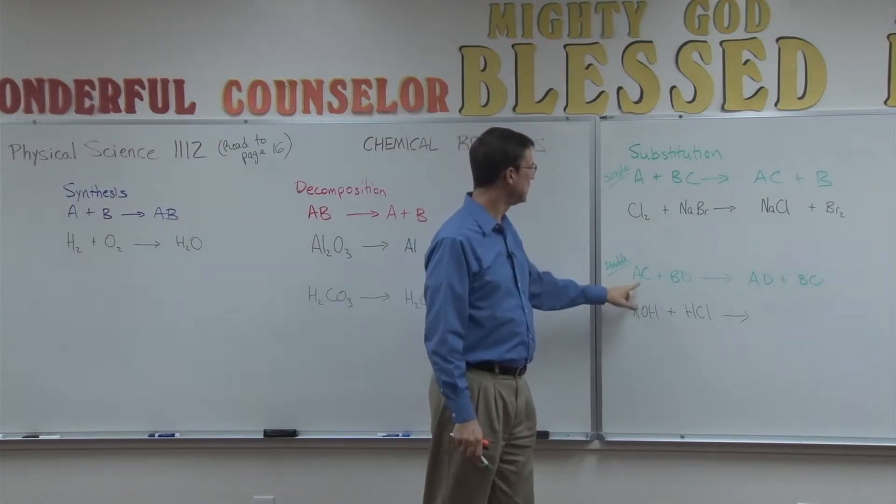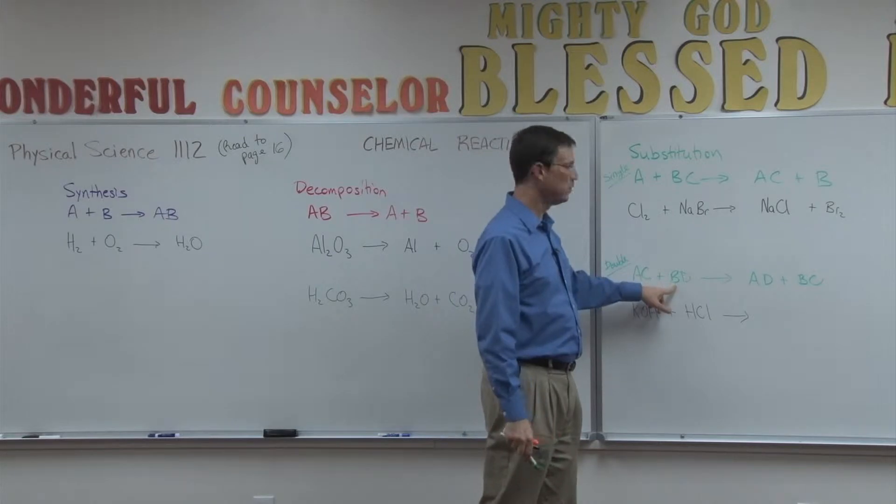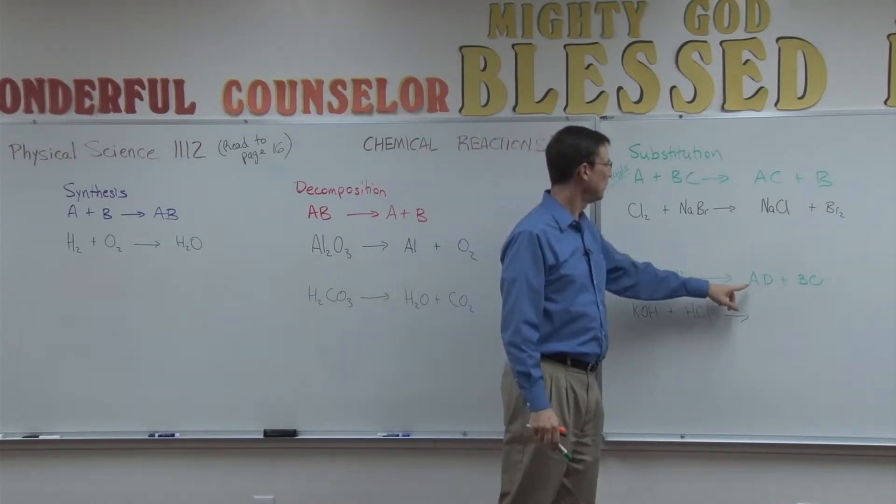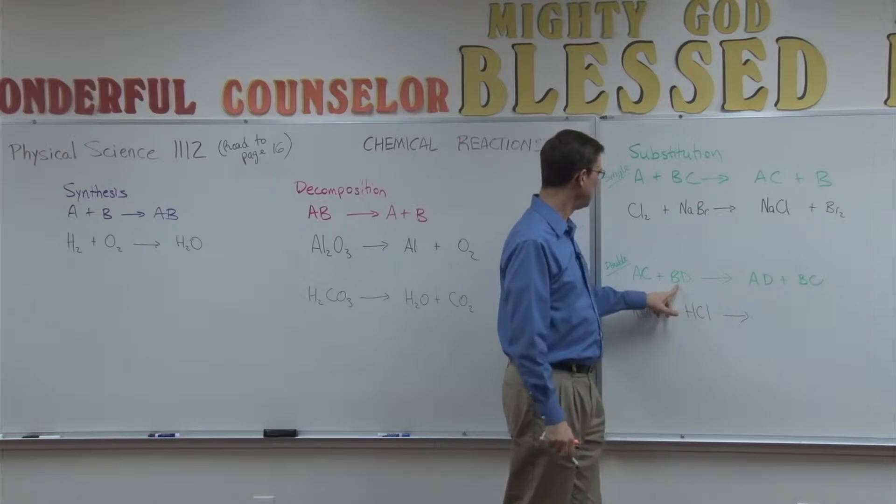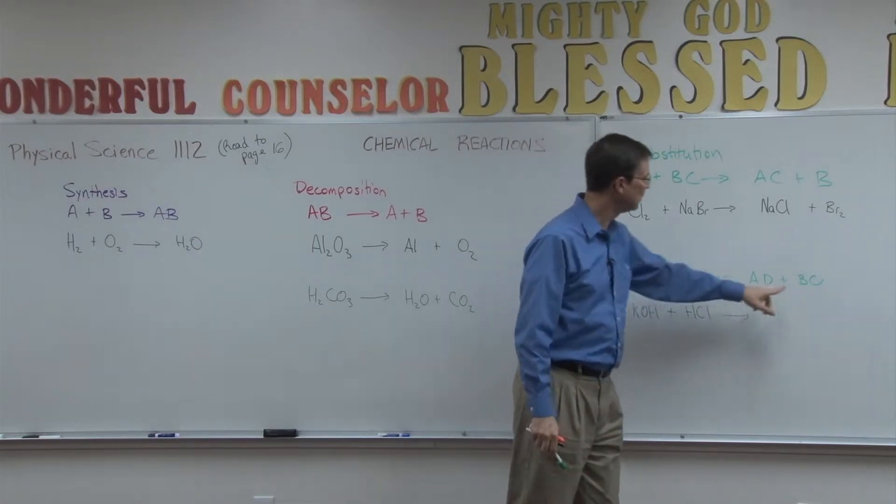The pace also talks about double replacement. These are both types of substitution. In double replacement, the first element here is switching with the first element in the other one. And so we end up with AD plus BC.